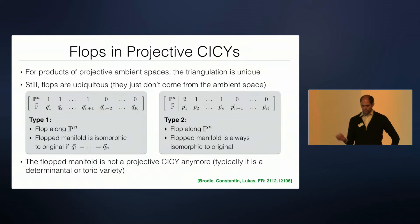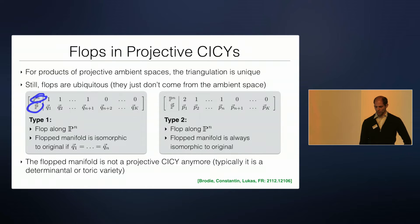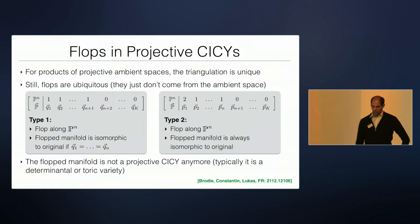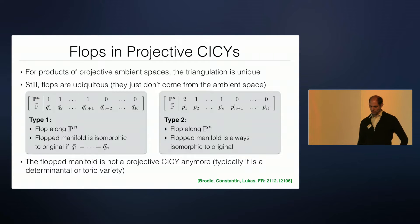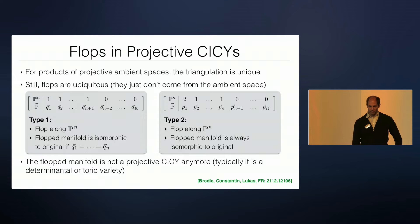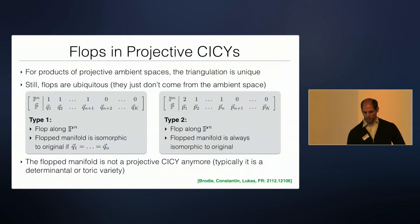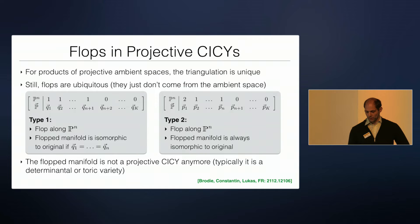Whenever you have a product of projective spaces P^n times some other P, and you write down the degrees of equations defining a complete intersection — if one of the columns has P^n with just n+1 ones and whatever below, you can flop along this P^n direction. Or if you have a 2 followed by some 1s and 0s, you can also always flop. These type-1 flops lead to a new Calabi-Yau after the flop. In the special case where all the Q's are the same, they lead to an isomorphic Calabi-Yau — you do the geometric transition and get a new Calabi-Yau, but it's isomorphic to the old one.